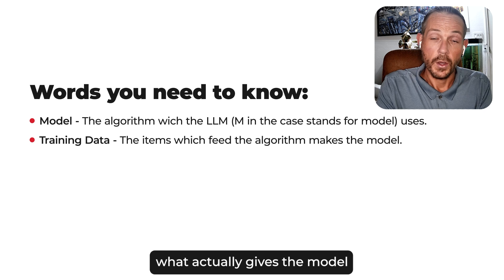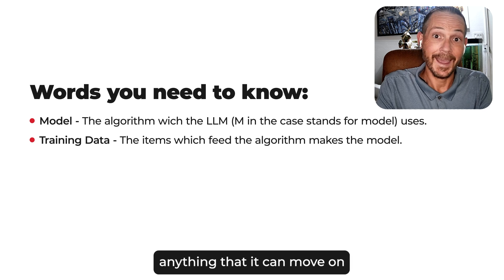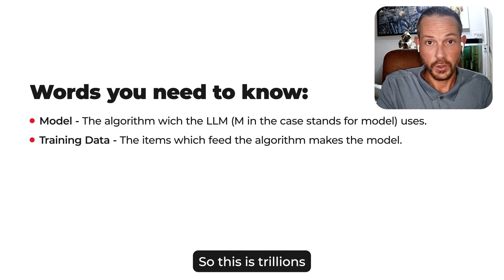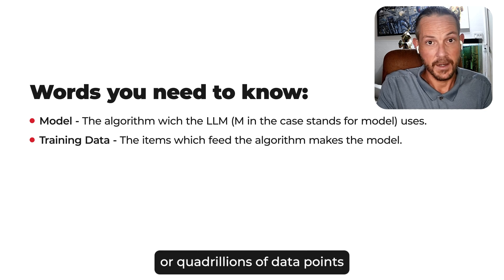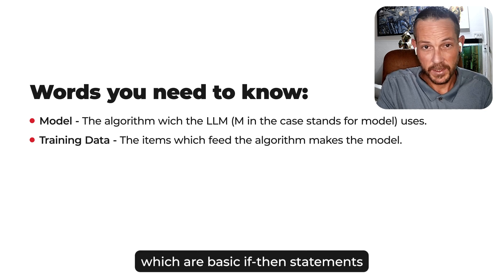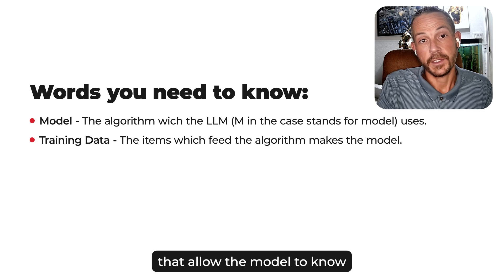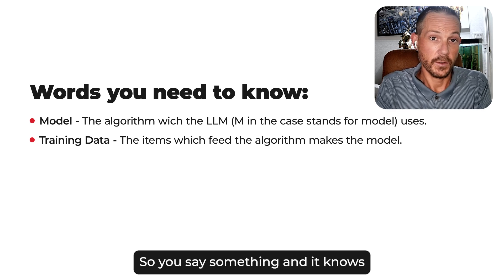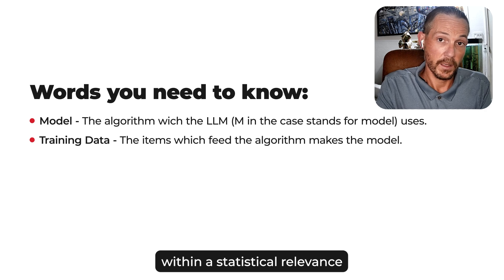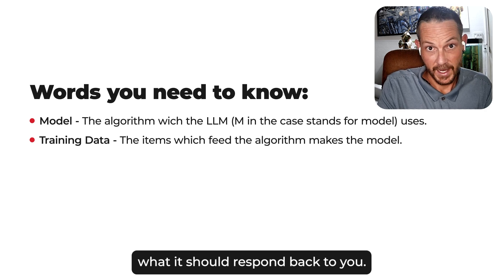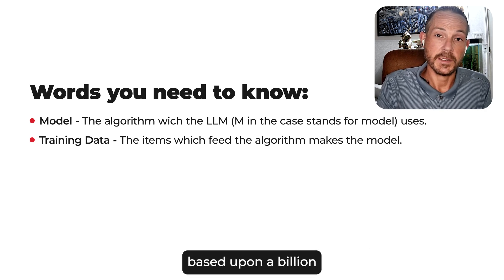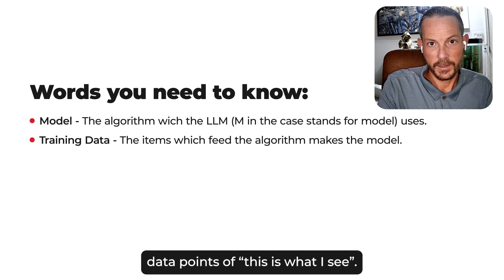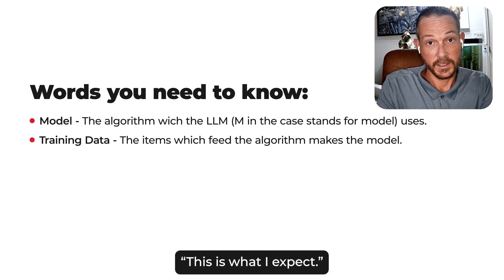Underneath that, what actually gives the model anything it can move on is the training data. This is trillions or quadrillions of data points, which are basically if-then statements that allow the model to know how to move based upon input. You say something and it knows within a statistical relevance what it should respond back to you — it's a mirror based upon billions, trillions, quadrillions of data points of 'this is what I see, this is what I expect.'